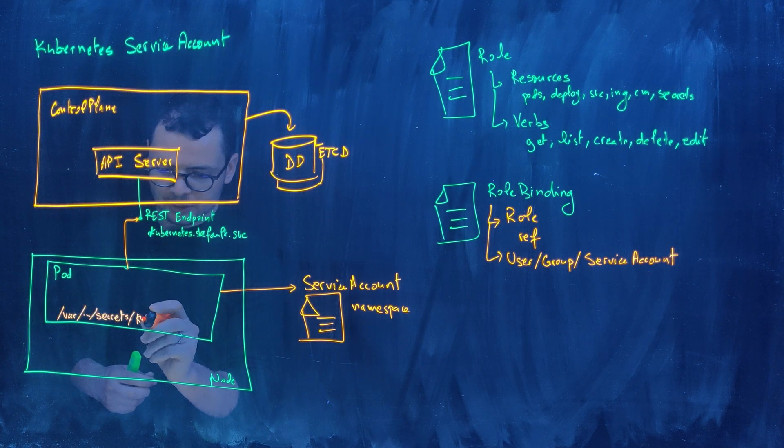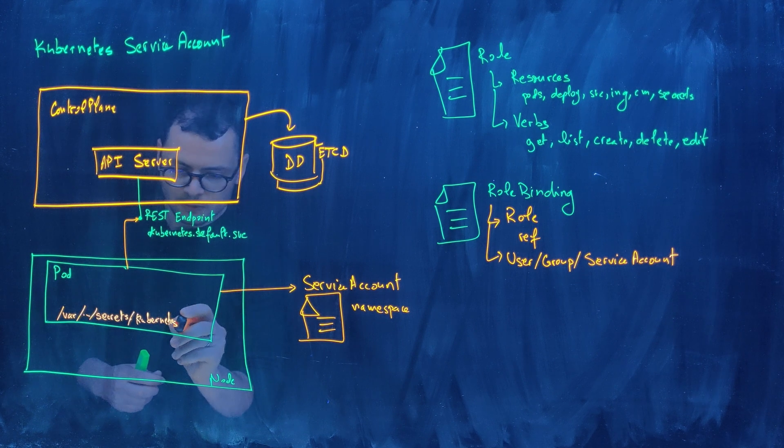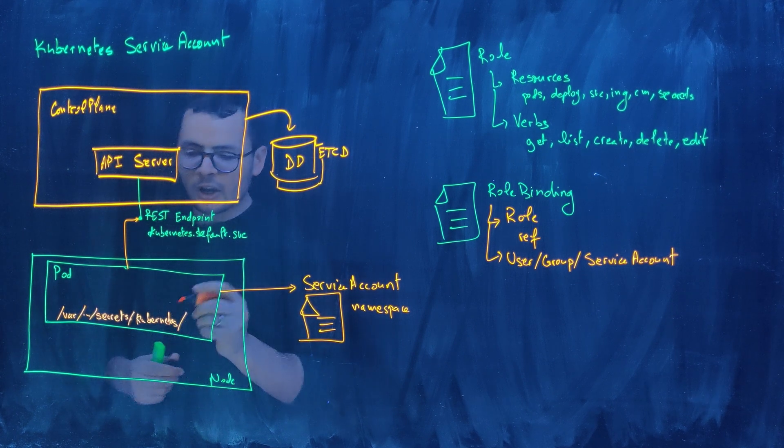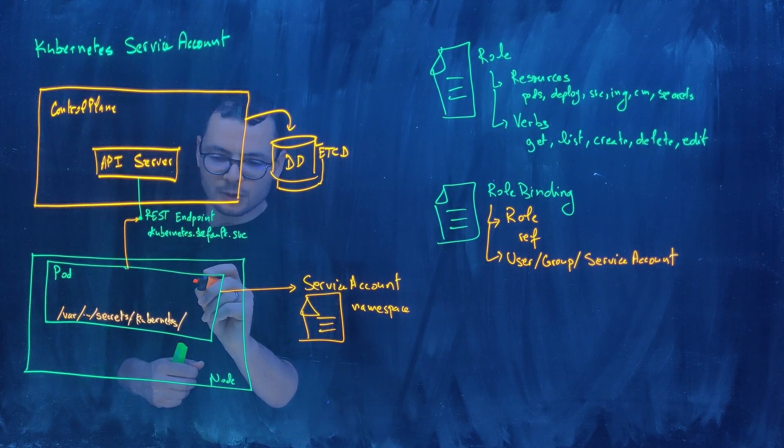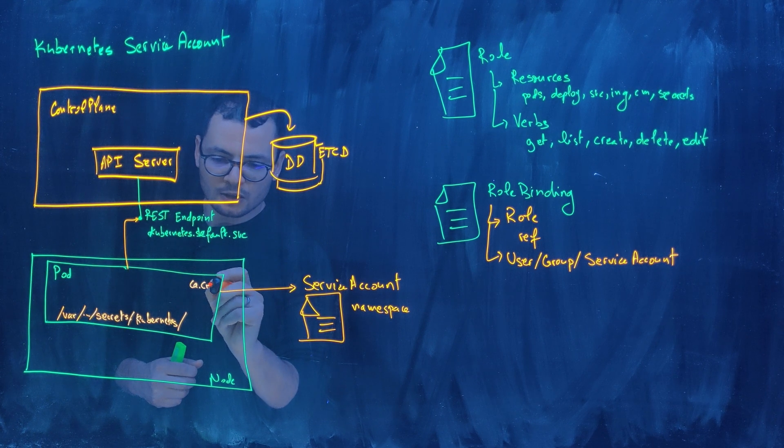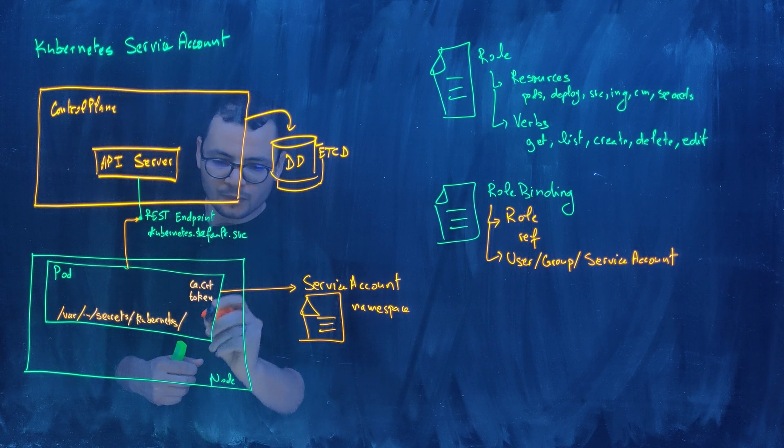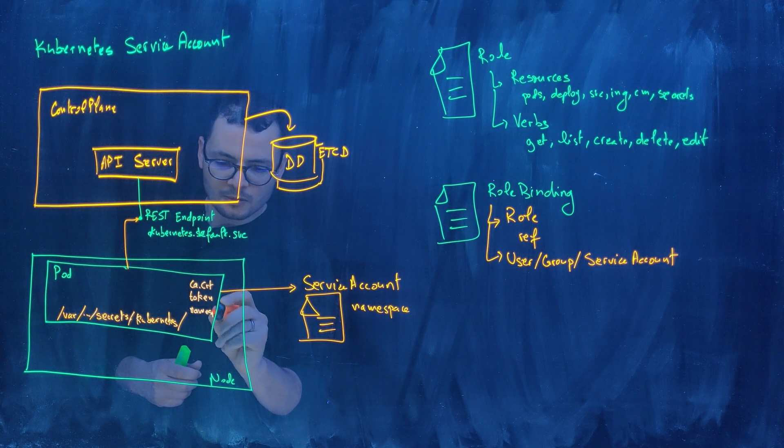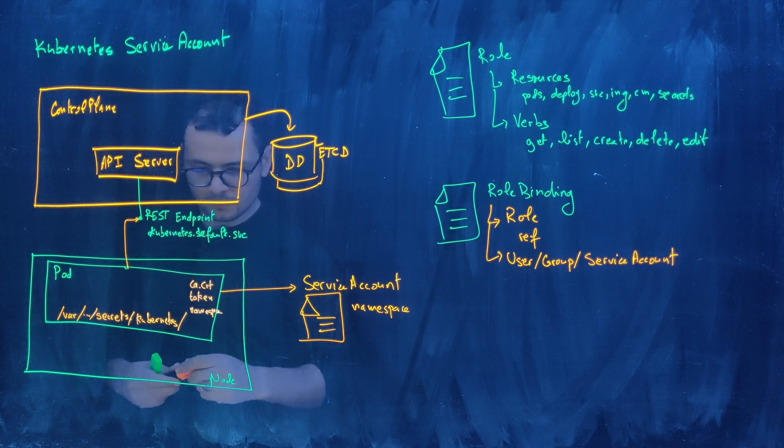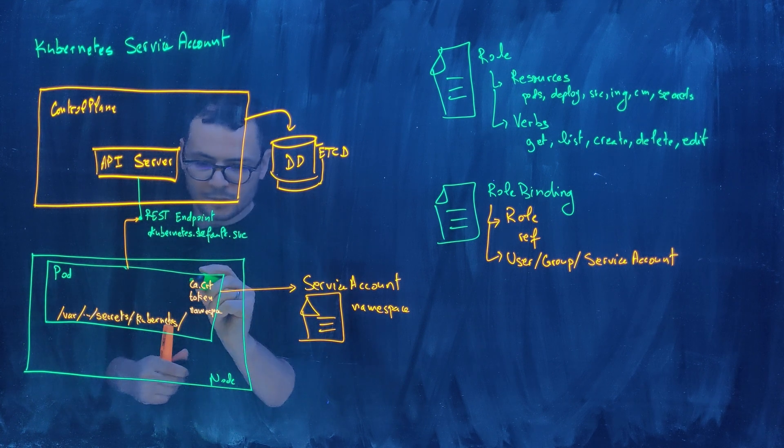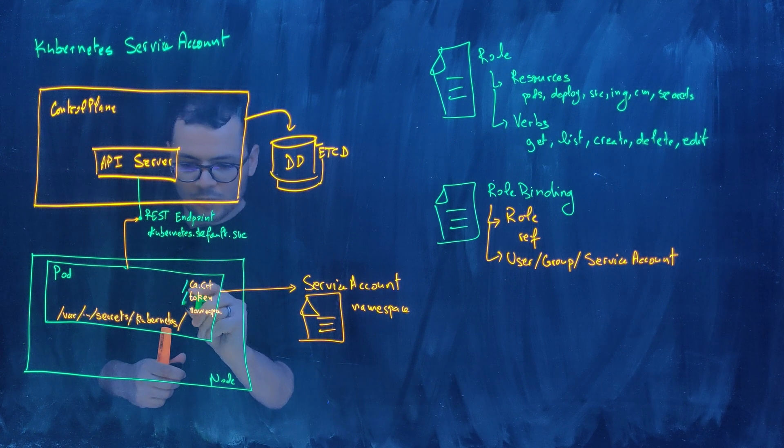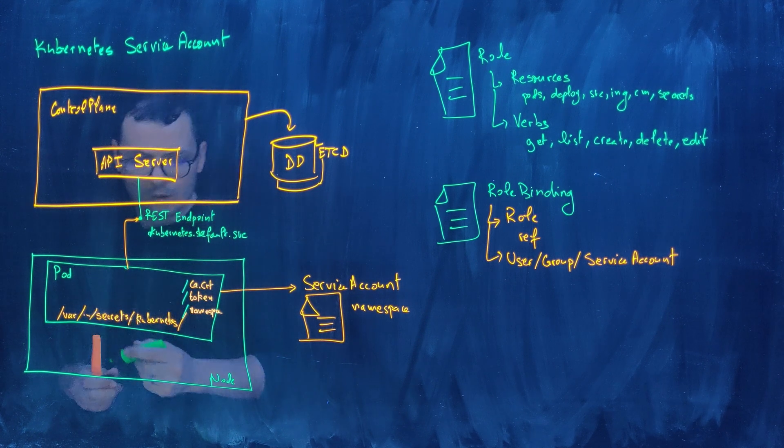...secrets/kubernetes, something like this. And then inside that folder, it will expose some files. So it will expose a ca.certificate, it will expose a token, and then it will expose the namespace.